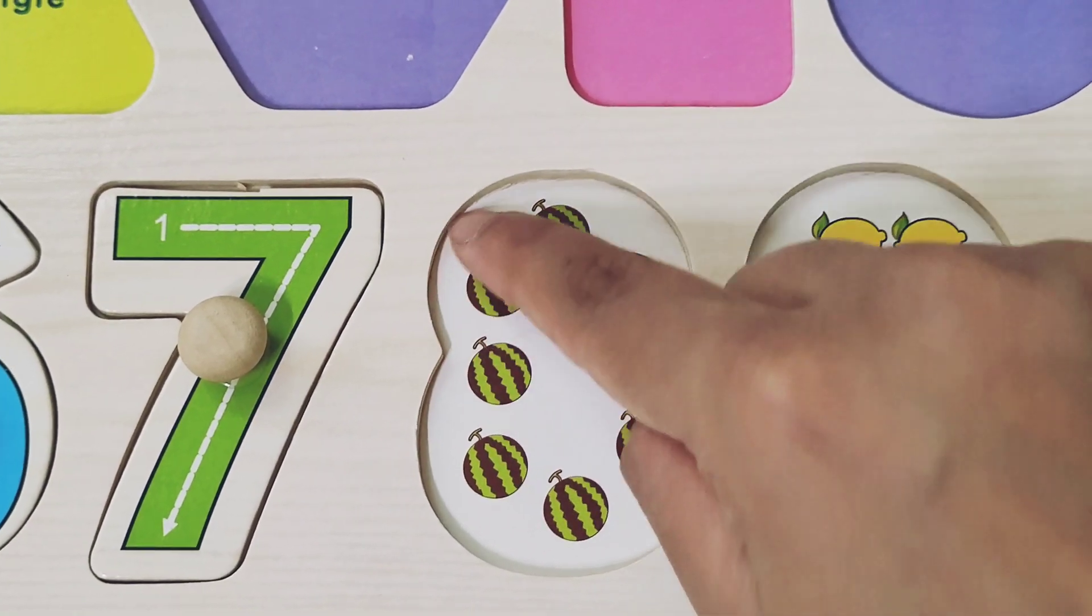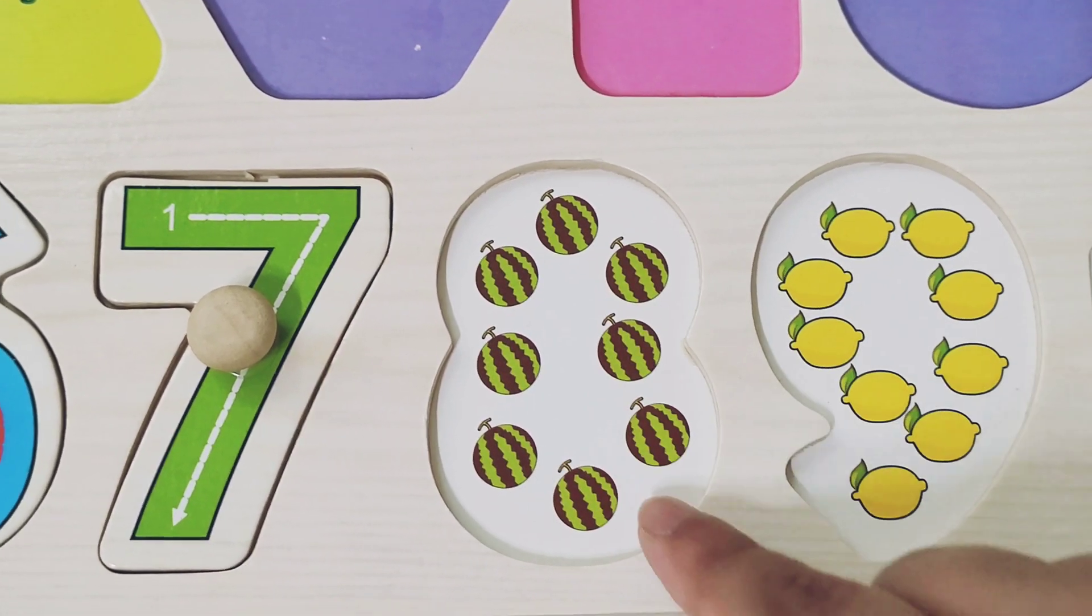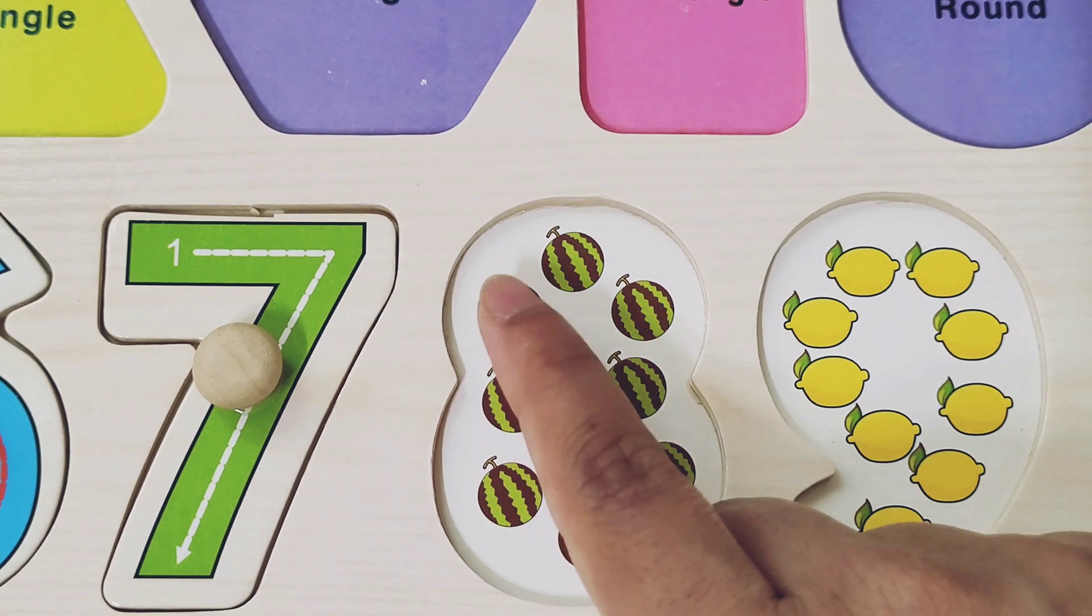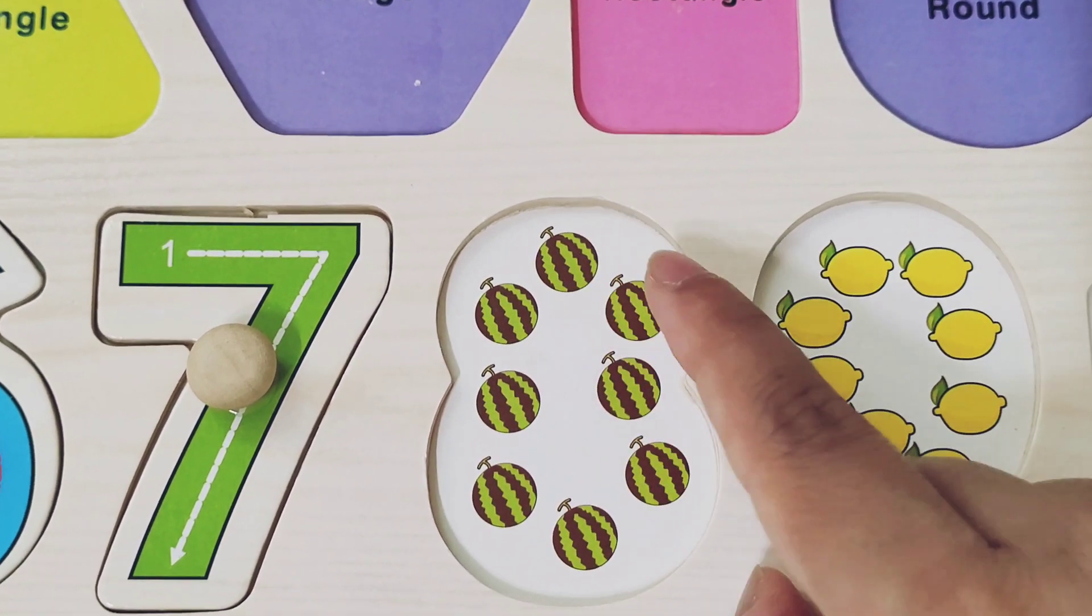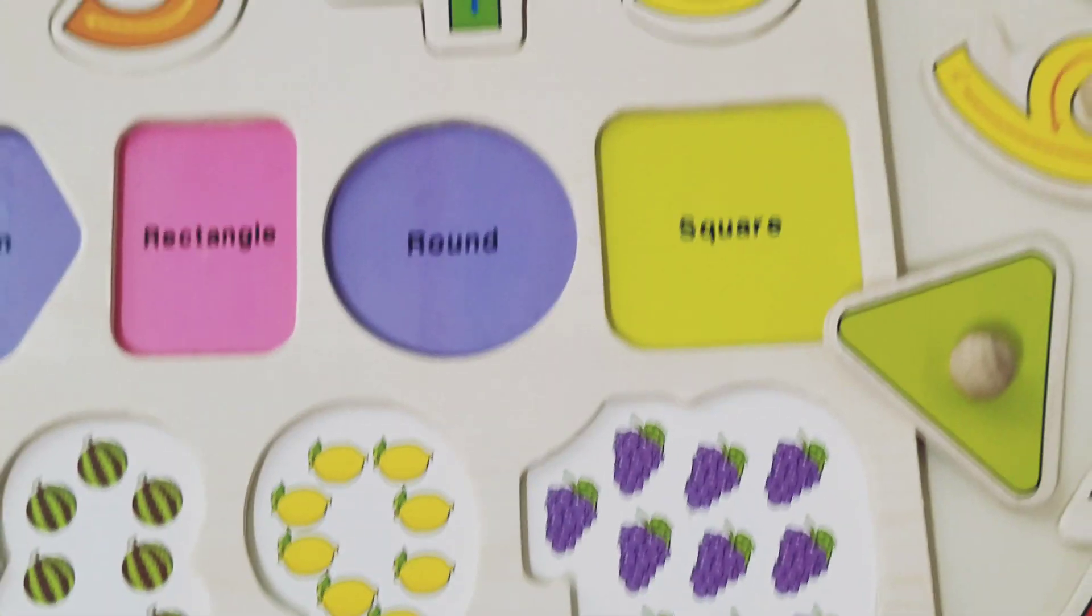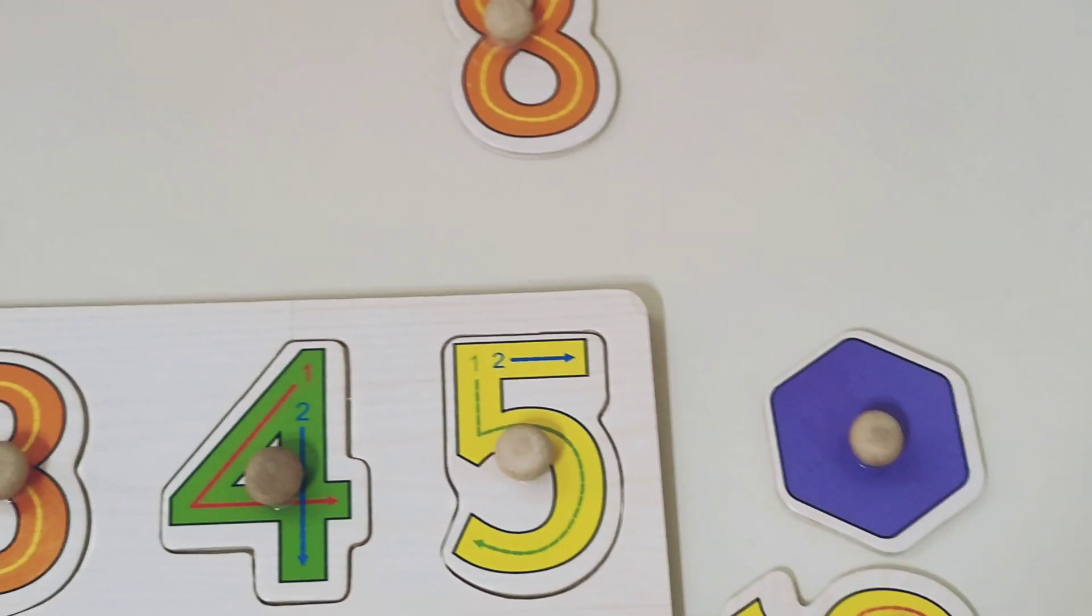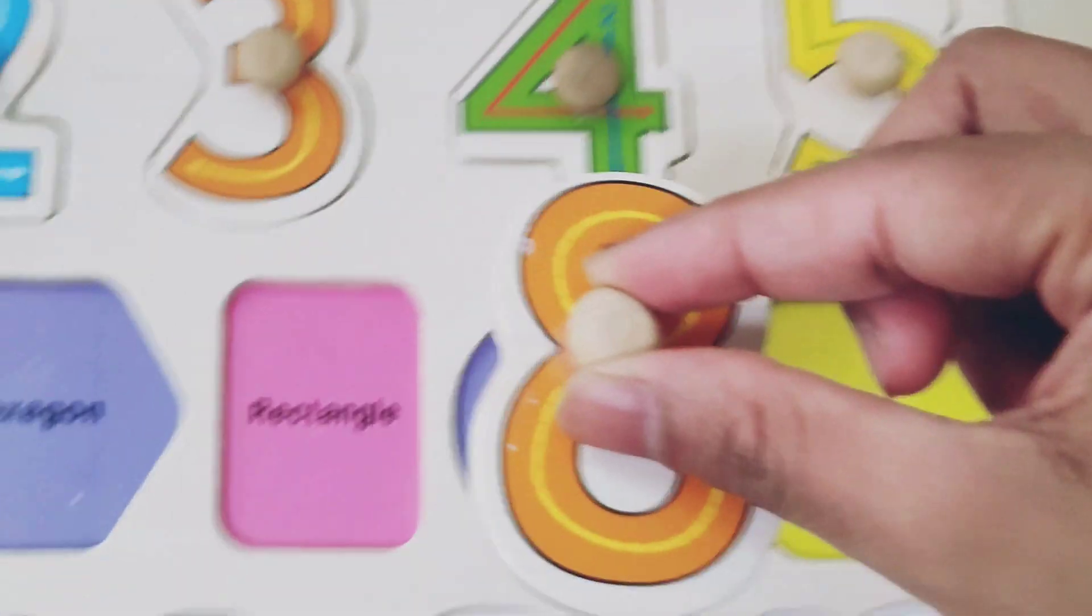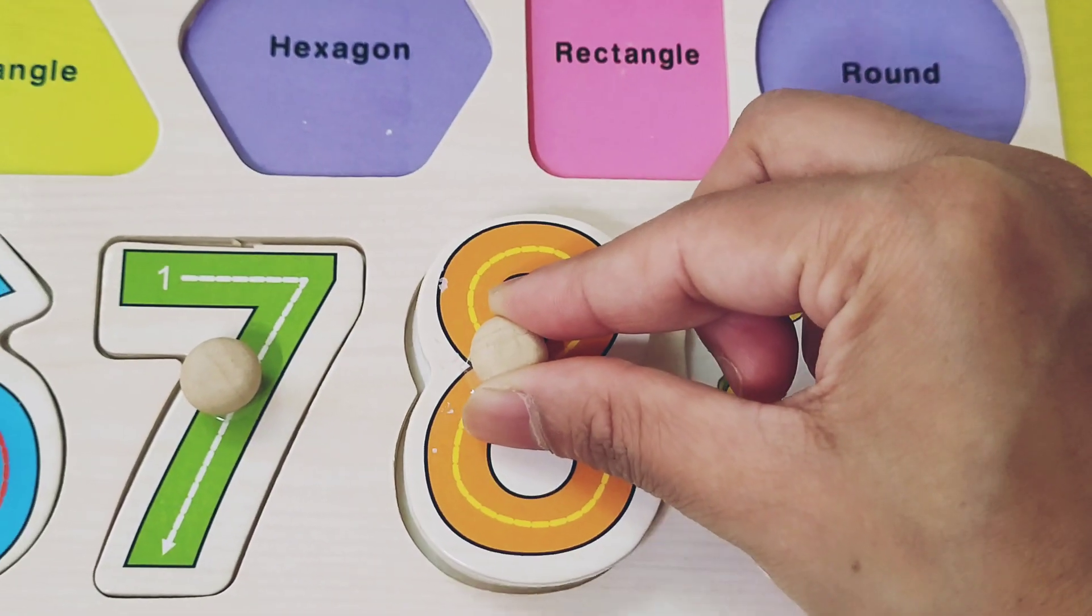And here we have so many watermelons. Let's count them. 1, 2, 3, 4, 5, 6, 7, 8. Let's find the number 8. Where is number 8? It's here! Let's take it. Number 8. Use it here.